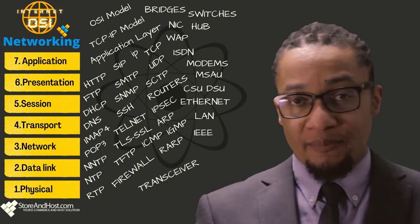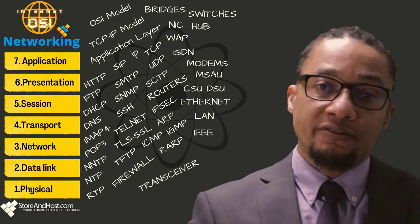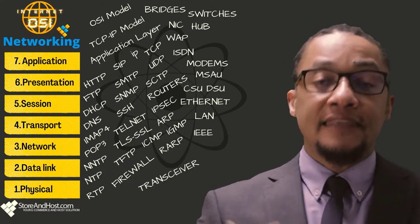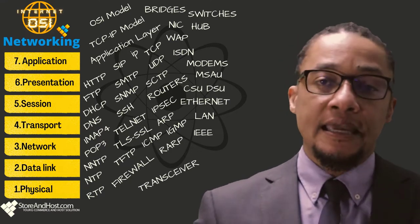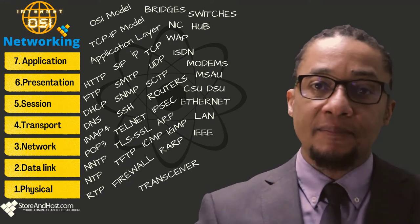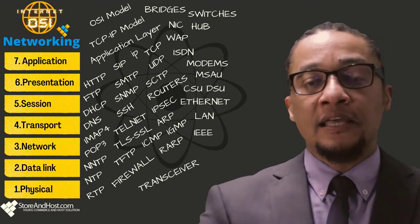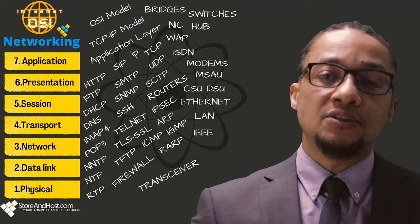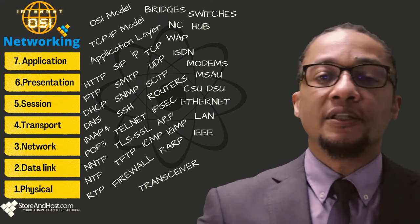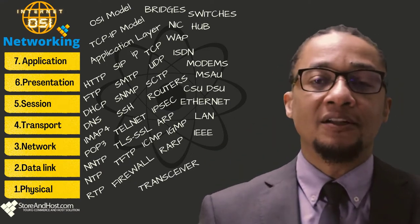In CSMA/CD, each host has equal access to the medium and can place data on the wire when it's free from traffic. When a host wants to place data, it first checks whether another host is already using the medium. If there's no traffic, it places the data. But if two systems place data simultaneously, they collide and destroy the data. After a collision, each host waits a small interval before retransmitting.